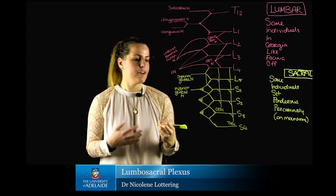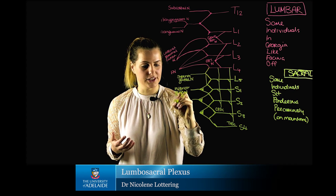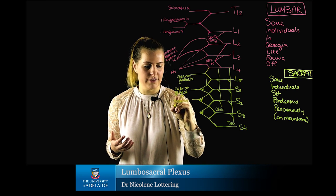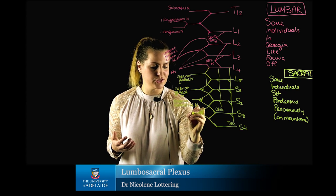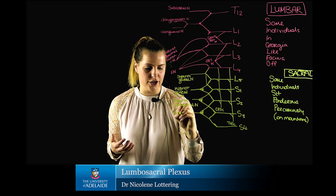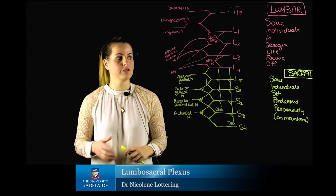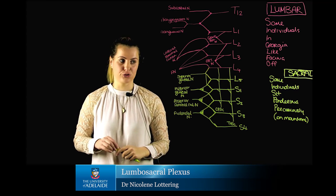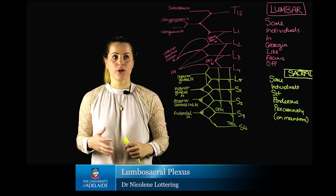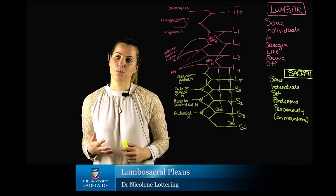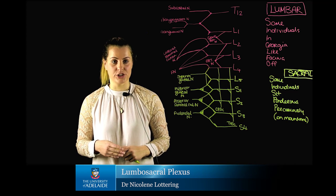Our next peak is going to correspond to the posterior femoral cutaneous nerve, and then our last one is going to be the pudendal nerve. This provides you with a quick overview of how to remember the lumbosacral plexus and how to draw it out in an exam in order to remember the major peripheral nerves associated with both plexuses as well as the origin associated with each of the nerves.